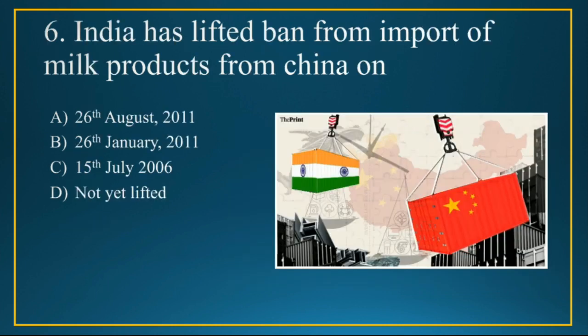Q6: India has lifted the ban on imports of milk products from China in which year? The ban on imports of milk products from China was first imposed in September 2008 and has never been lifted, so the answer is option D — the ban is still in place. The ban was imposed due to the presence of melamine in some milk consignments from China. Melamine is a toxic chemical used for making plastics and fertilizers. Though India is the largest producer and consumer of milk, this ban was imposed as a preventive action.